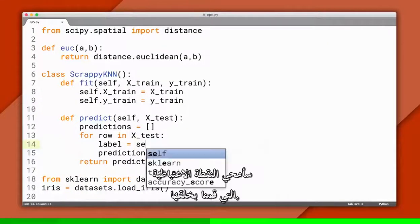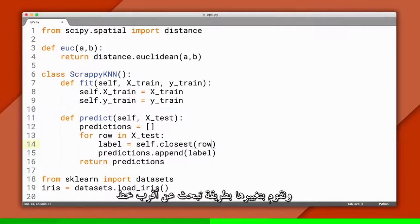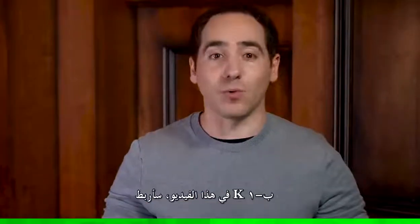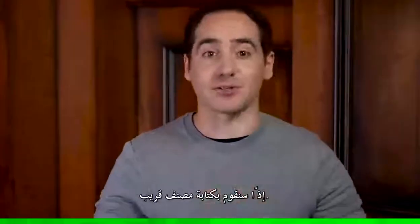I'll delete the random prediction we made, and replace it with a method that finds the closest training point to the test point. For this video, I'll hard code k to 1, so we're writing a nearest neighbor classifier.